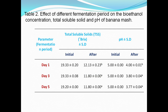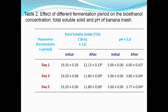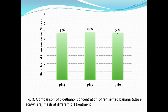For banana, the concentration of yeast at different pH levels was measured over different days — first, third, and fifth day. Initially soluble solids and pH were higher, then decreased from day one through days three and five. Regarding the optimal bioethanol concentration from fermented banana at different pH treatments, pH 5 gave slightly higher bioethanol concentration compared to pH 4 and pH 6.